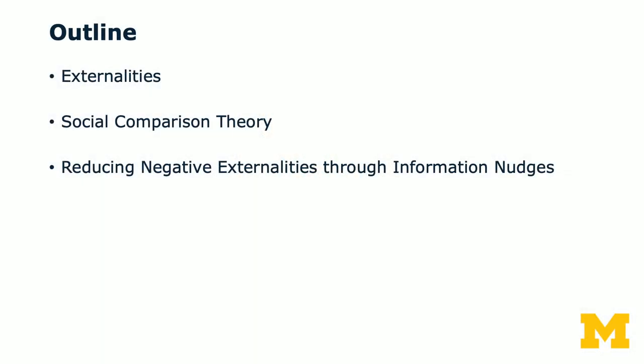We're going to talk about how one might reduce negative externalities through information nudges. We'll first define externalities and give some examples. We'll then move to social comparison theory and talk about an example where one can reduce negative externalities through information nudges.